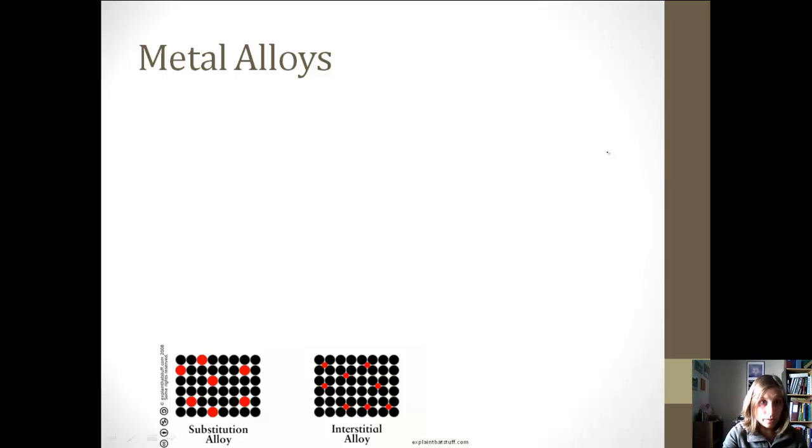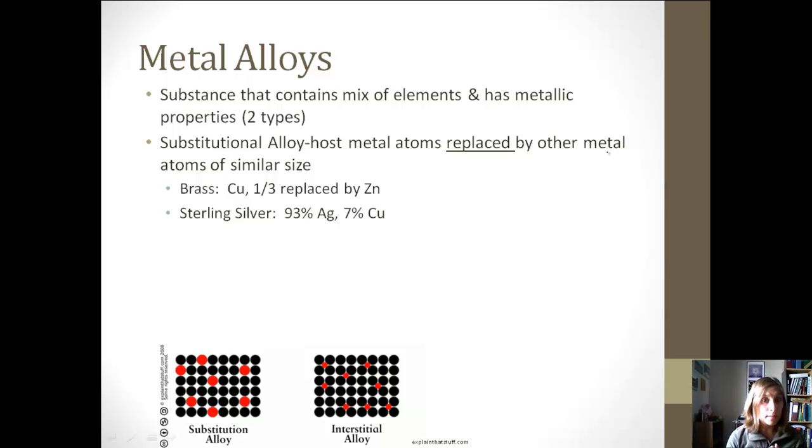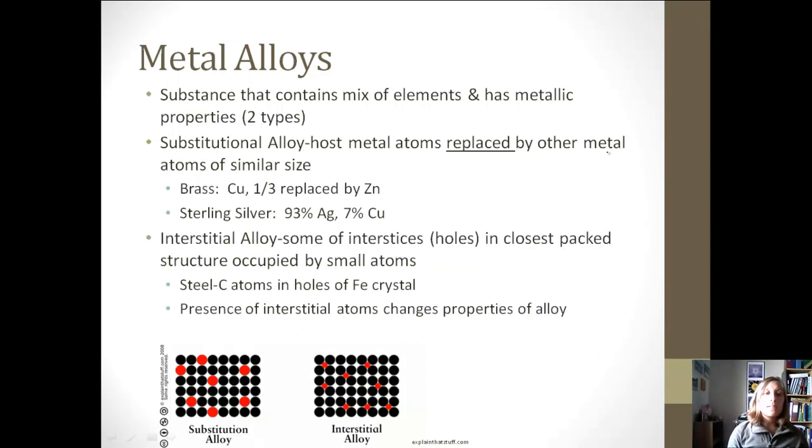So last little thing we're going to talk about are alloys. Alloys are really common with metals. So a metal alloy is basically a mix of two or more different elements with metallic properties. And so there are two different types. We can have a substitutional alloy, which if you think about it, something is being substituted. And so one of the metals is replacing other metal atoms, and they kind of have to be similar size. And so some examples of this would be brass. Brass is an alloy of copper and zinc, so a third of the copper gets replaced by the zinc atoms. Another one would be sterling silver. It's 93% silver and 7% copper. The other main type is an interstitial alloy, and so basically what happens is you have these really smaller metals that fill in the holes or the spaces in the closest pack structure of those bigger atoms. For example, steel, the carbon atoms are a lot smaller, so they fill in the holes of an iron crystal.